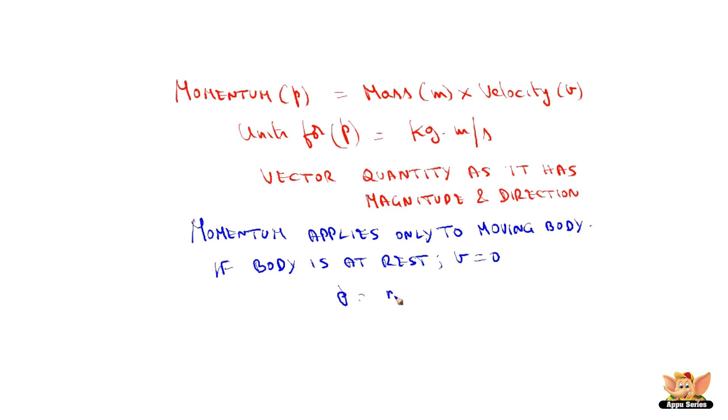So, P is equal to m into V. So, m into 0 becomes 0. So, we understand the equation for momentum as P is equal to m into V. Now, we will see an example on momentum.